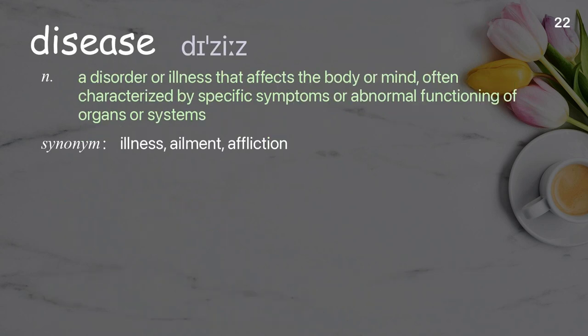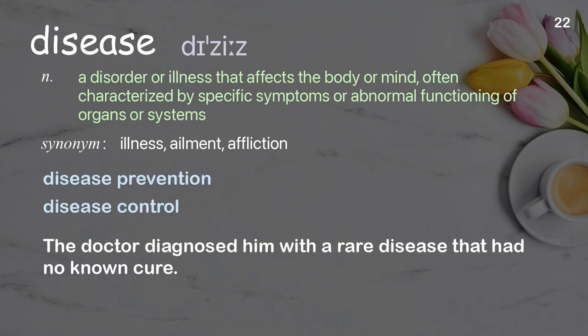Disease: a disorder or illness that affects the body or mind, often characterized by specific symptoms or abnormal functioning of organs or systems. Examples: disease prevention, disease control. The doctor diagnosed him with a rare disease that had no known cure.